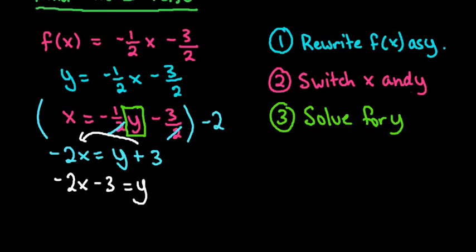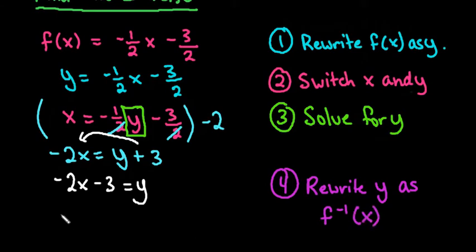And then step four is just to take and rewrite y back in function notation. But because we found the inverse, we're going to write it in inverse notation. So we're going to say that the inverse of f(x) is equal to negative two x minus three.